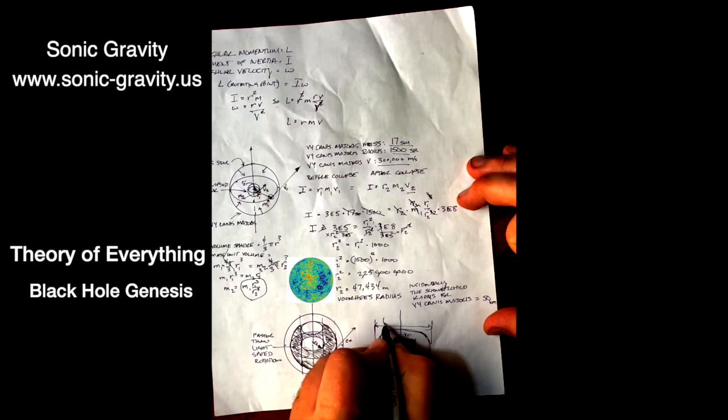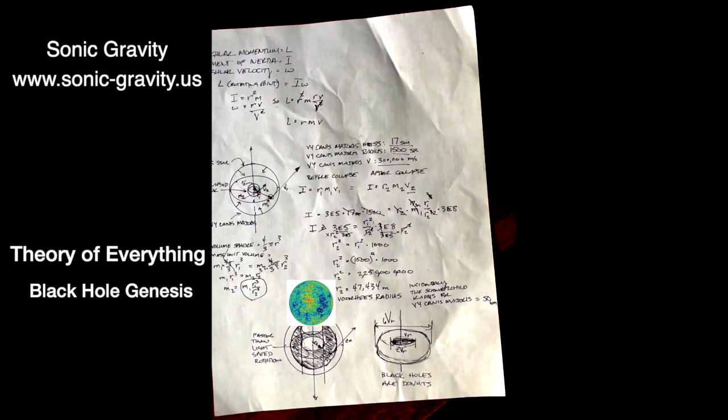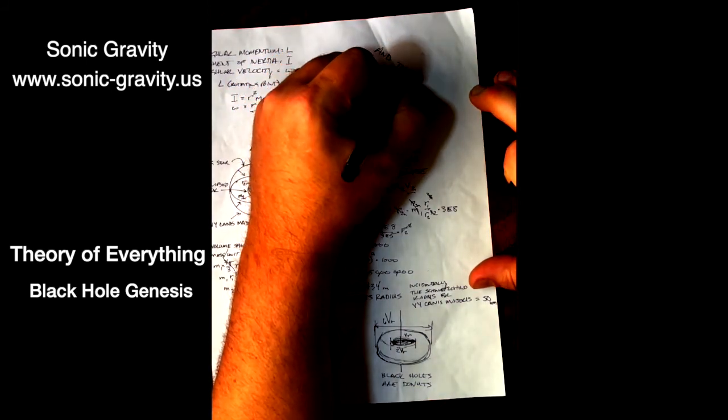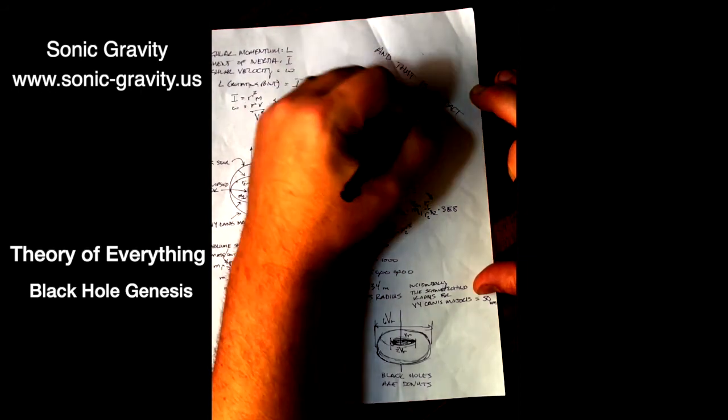So in September 2021, the sonic gravity theory of everything claimed that black hole genesis arose from quantum gravity when the core of that star rotates faster than the speed of light and goes back in time and big bangs. The hole in the center of a black hole is space. And through that hole is another universe.